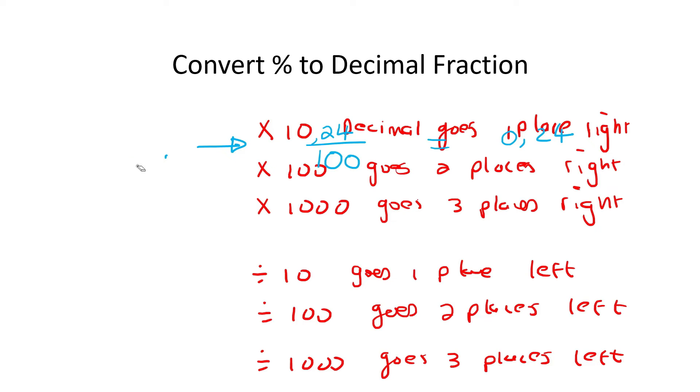Don't believe me? Well, remember we had this slide over here in one of our earlier chapters. And what we said here was that when you divide numbers, you move the decimal left. When you multiply numbers, you move the decimal right. So, what I just said was 24% is the same as 24 over 100, and so here we are actually dividing with 100.